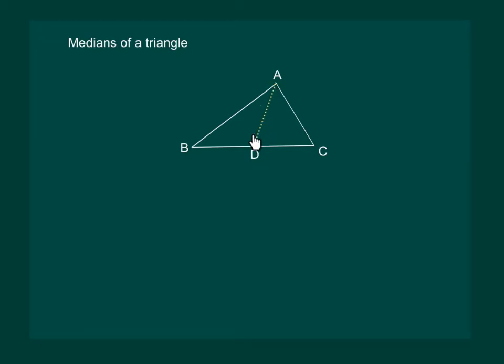Then AD is called the median of triangle ABC. Hence we can say that a median connects a vertex of a triangle to the midpoint of the opposite side.